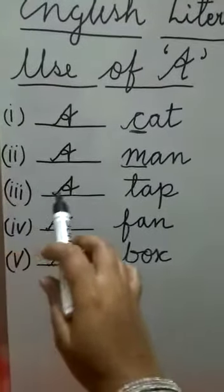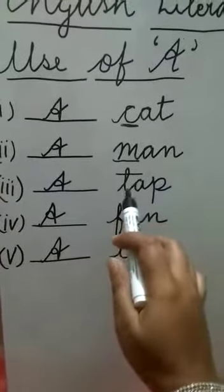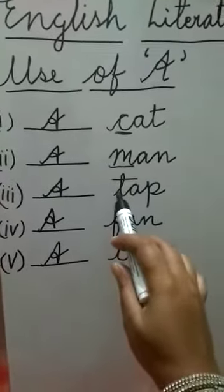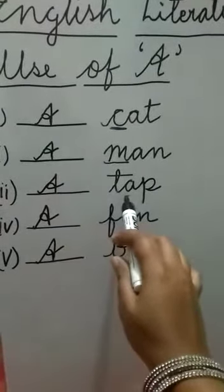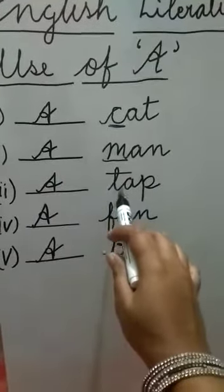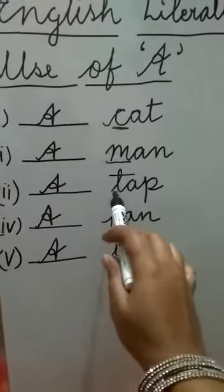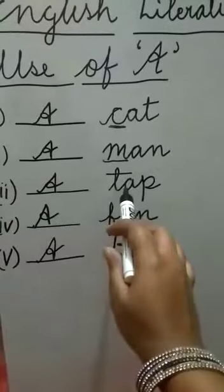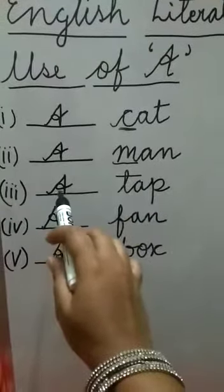Third one, A tap, T-A-P, tap. Over here, T is what? T is a consonant. It is not a vowel. It is not A, it is not I, it is not E, it is not O, it is not U. So T is a consonant. We will use A here.